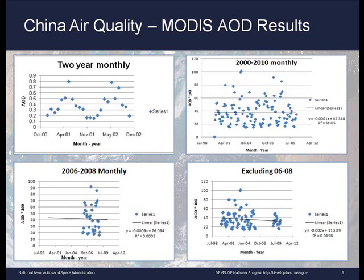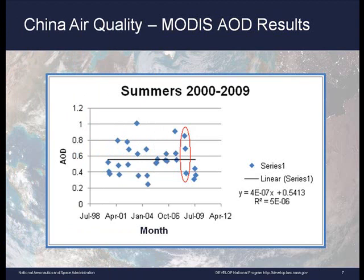The slope of the trends indicates no statistically significant improvement in air quality leading up to the 2008 Olympic events. This graphic depicts MODIS AOD summertime data from 2000 to 2009. The red circle indicates year 2008, and the month of August — when the Summer Olympic Games took place — shows the lowest AOD value among the three data points in the red circle. However, this 2008 August value is not the lowest overall for AOD between 2000 and 2009, suggesting that one cannot determine with certainty that there were any significant improvements in air quality leading up to the Olympic Games.